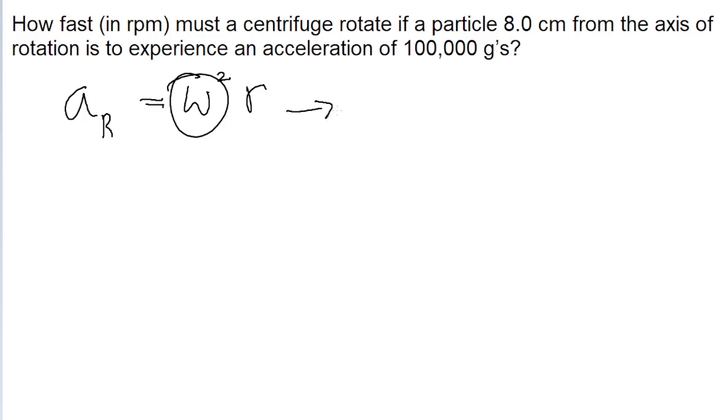let's algebraically rewrite this equation to solve for omega. So first, we'll divide both sides of the equation by r. So we find that the angular speed squared is equal to the centripetal acceleration divided by the radius. Then we'll take the square root of both sides to solve for omega.